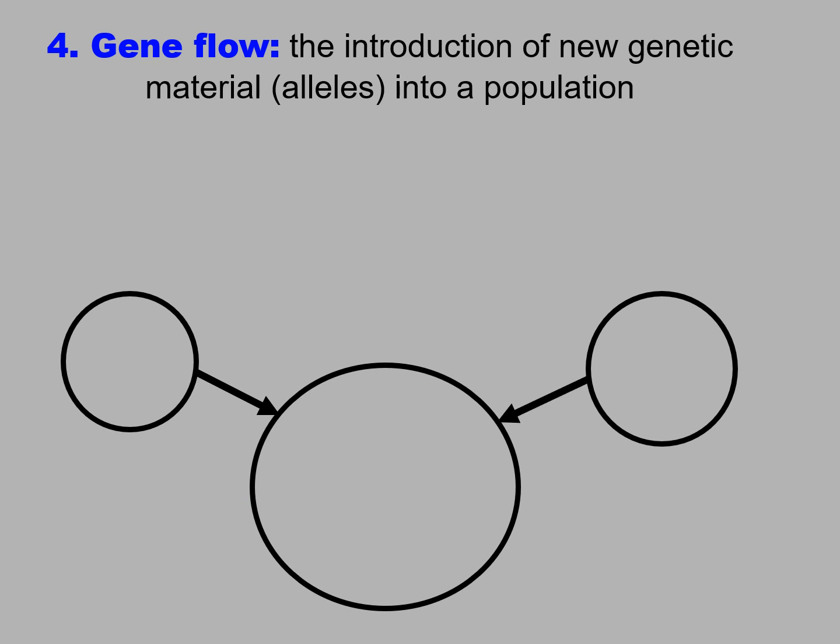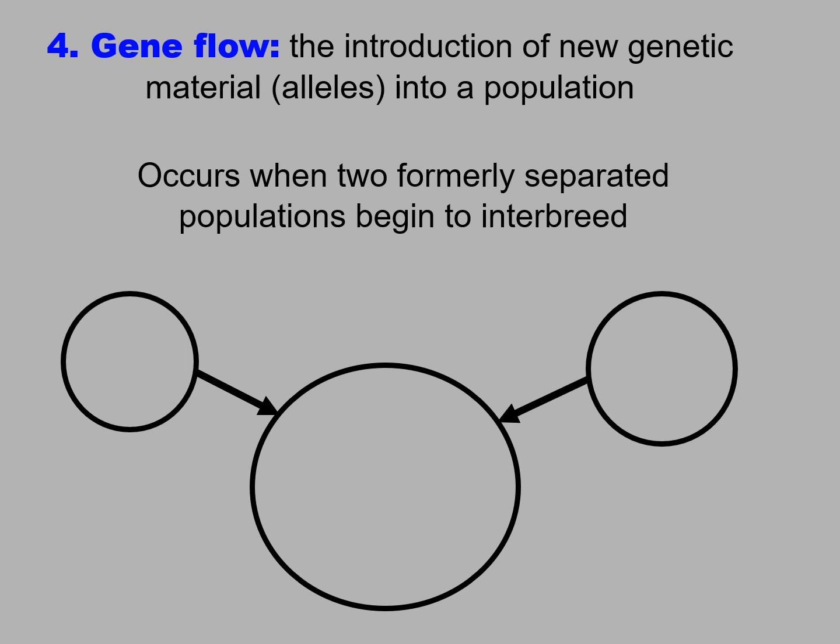The fourth source of variation in populations through time is gene flow — that is, the introduction of new genetic material, new alleles, into a population. It occurs when two formerly separated populations begin to interbreed.